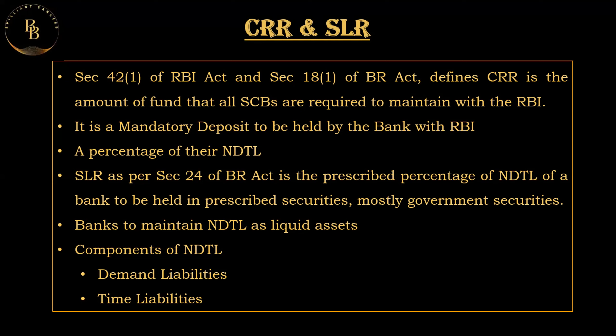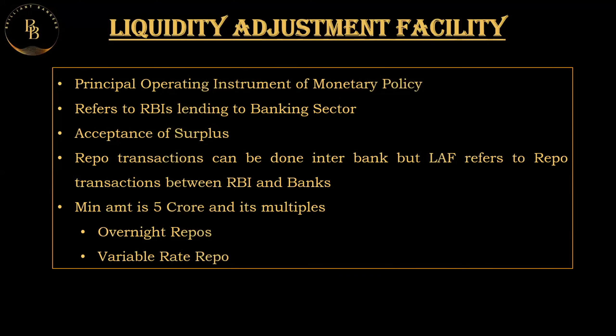Coming to the next topic — the Liquidity Adjustment Facility (LAF). The LAF is the principal operating system of monetary policy. It is a monetary policy tool used by the Reserve Bank of India to manage short-term liquidity in the banking system. It is designed to help banks maintain an appropriate level of liquidity and to control money supply in the economy. The LAF consists of two main components: the repo rate and the reverse repo rate.